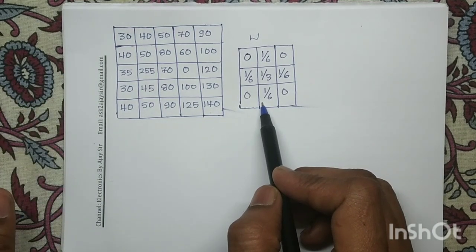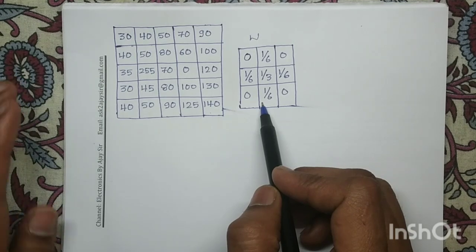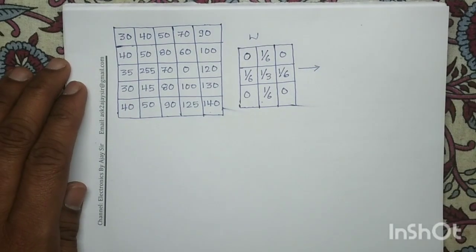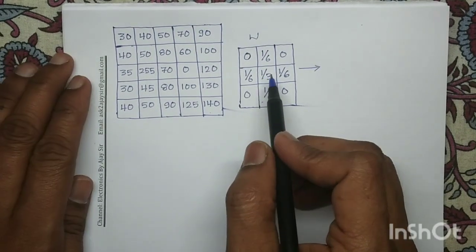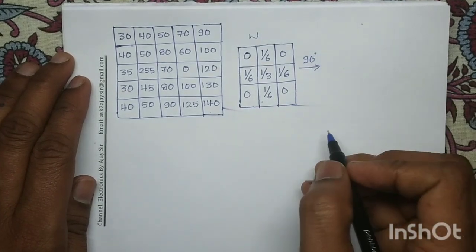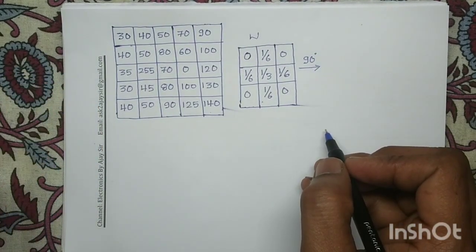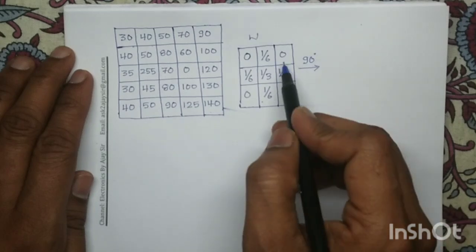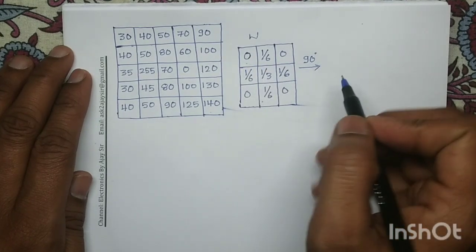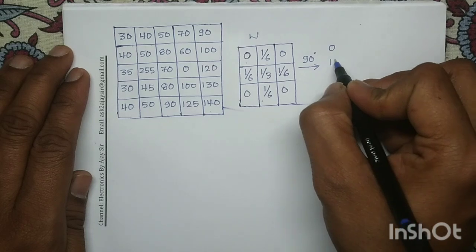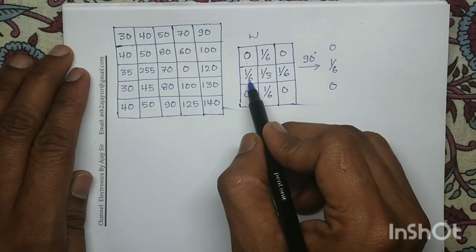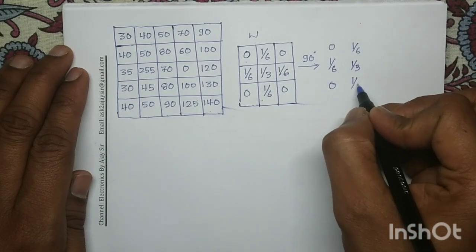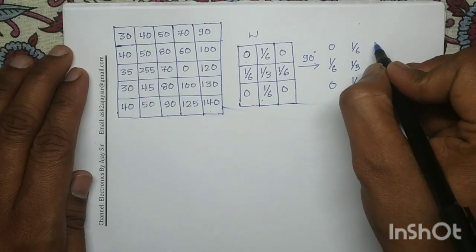In order to proceed with the convolution process, this mask we have to rotate it by 180 degrees. To achieve the total 180 degree rotation, first we will rotate this mask by 90 degrees in the anticlockwise direction. Rotating this mask by 90 degrees anticlockwise means this first row becomes the first column, this second row becomes the second column, and this third row becomes the third column.